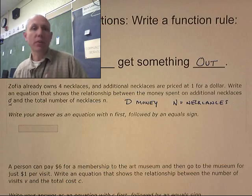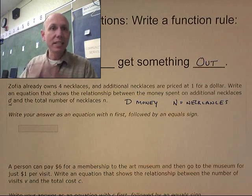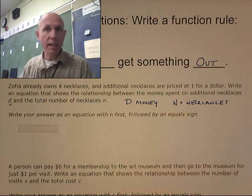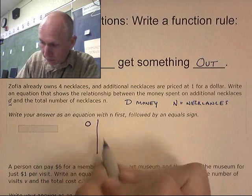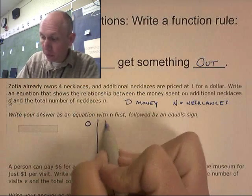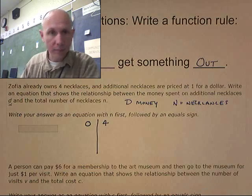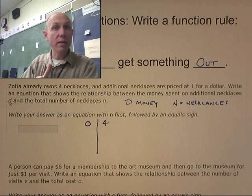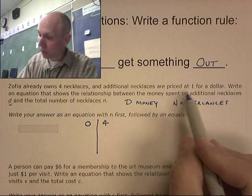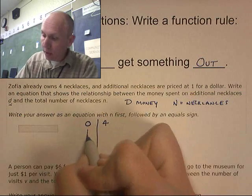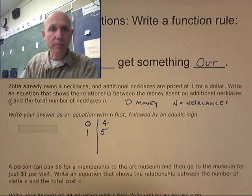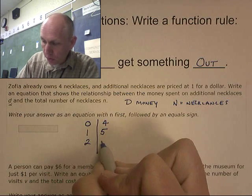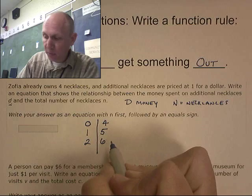So let's just think through this first. If she has zero dollars, how many necklaces will she have? So at zero dollars, she has four necklaces. What about one dollar? She goes and spends one dollar. They're one for a dollar. At one dollar, she'll have five necklaces. At two dollars, she'll have six necklaces.